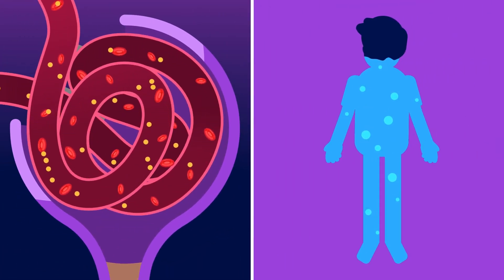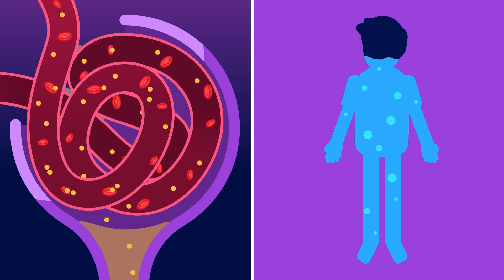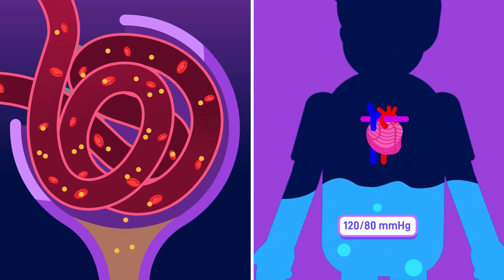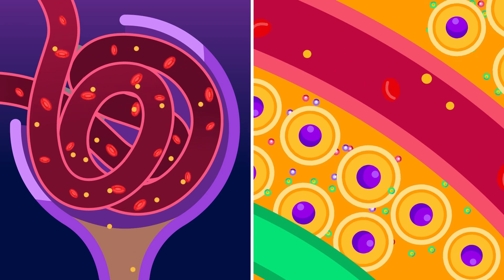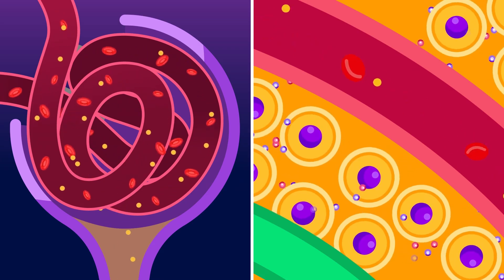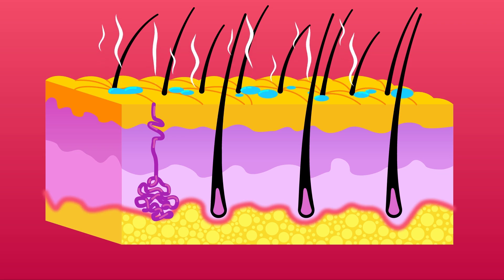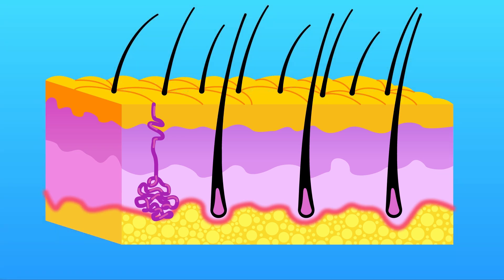Number four, the kidneys regulate our fluid balance by adjusting urine production to prevent dehydration and keep a normal blood pressure level. Additionally, it eliminates most of the metabolic waste to prevent it from accumulating in the body. Number five, the skin releases sweat that evaporates to absorb heat from the body, thereby regulating our temperature while also removing excessive salt.